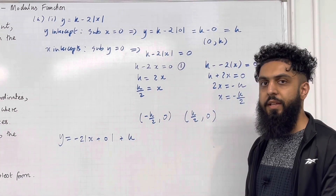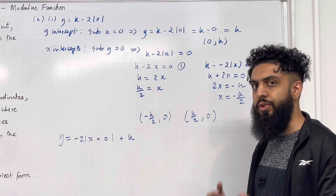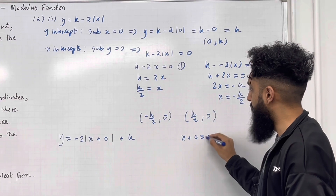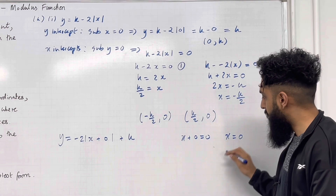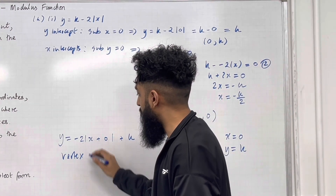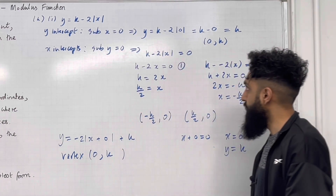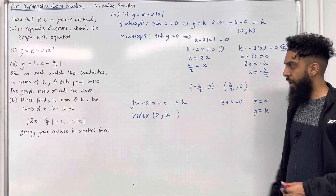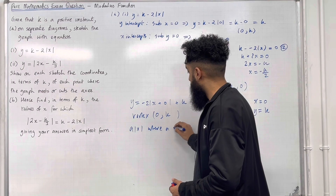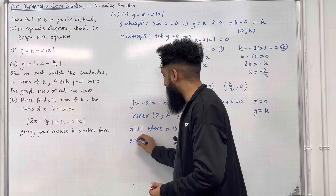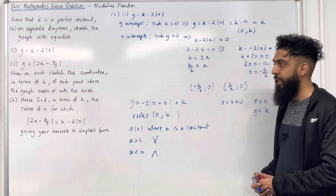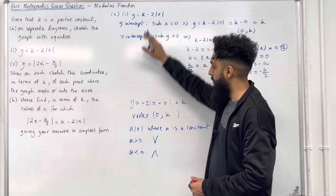Treating this as a quadratic in completed-square form, we can extract the turning point. From x + 0 = 0, the x-coordinate of the vertex is x = 0, and the y-coordinate is the outer term, positive k. So the vertex has coordinates (0, k) — which is precisely the y-intercept. For the shape: if a|x| has a < 0, the graph is an upside-down V-shape. Here a = −2, which is less than 0, so the graph takes that upside-down V-shape.